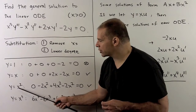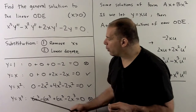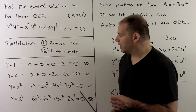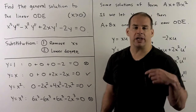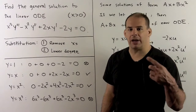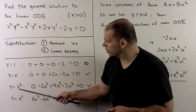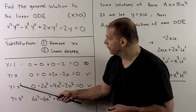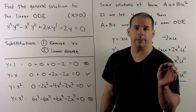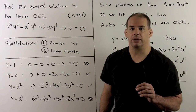Likewise, if I try Y equals X squared, we have a solution. If I try Y equal to X cubed, I'm not going to find a solution, and we note for any higher monomials they're not going to be solutions either. So just by playing around with the equation, I found two solutions. This is a third order ODE, so we're just missing one more to get the basis to make linear combinations out of.